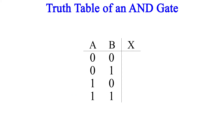These are the four possible combinations of inputs. Now we can determine the output for each of the given inputs. The first row has inputs of 0 and 0, so the output is 0. The next row is 0 and 1, so the output is 0. The third row is 1 and 0, so the output is 0. And the fourth row is 1 and 1, so the output is 1. So here's the truth table for the two-input AND gate.